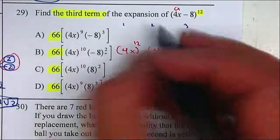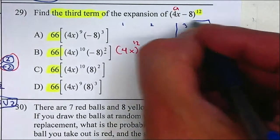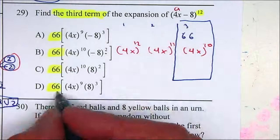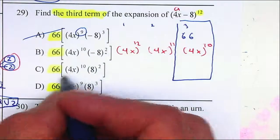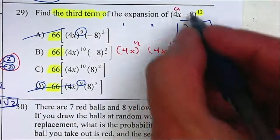We're only looking for the third term, not for the entire thing. So let's see, 66, they were all the same, 4x to the 10th. So I know that's not it, and I know this one's not it. Now letter B...